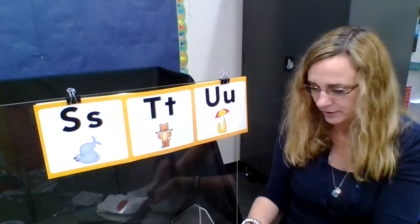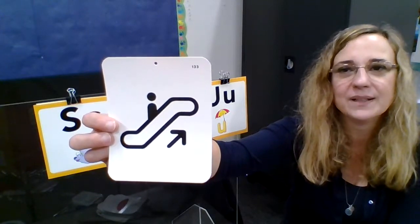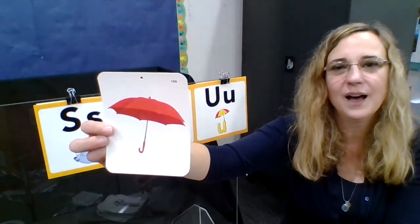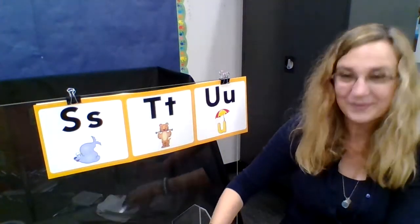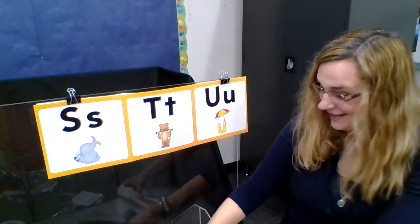Let's practice our u-words. This person is going uh-uh-up, uh-uh-up on the escalator. Uh-uh-umbrella, uh-uh-umbrella. This is an uh-uh-umpire, uh-uh-umpire. All righty.